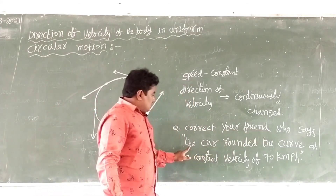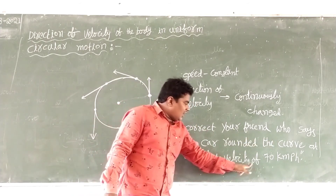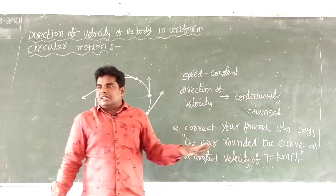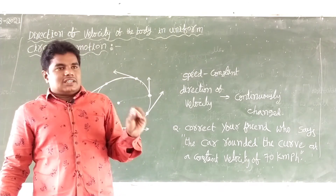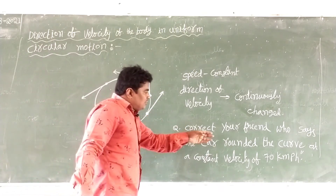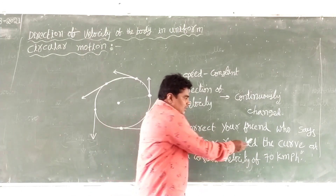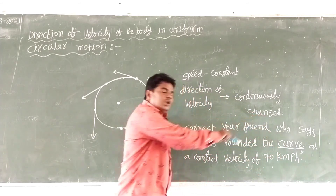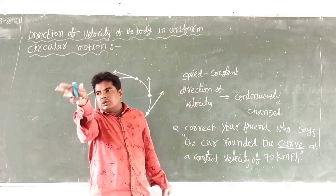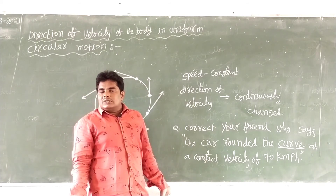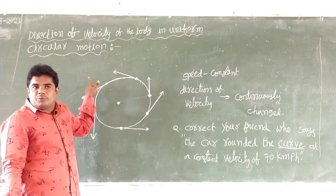The car rounded the curve at a constant velocity of 70 km per hour. What is the mistake in that statement? Velocity. The car is moving in a curve — in a circular path. What is its direction? The direction changes. The velocity changes.